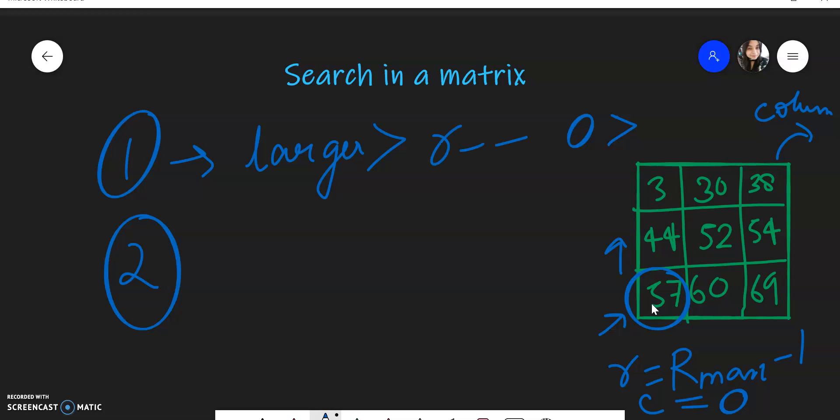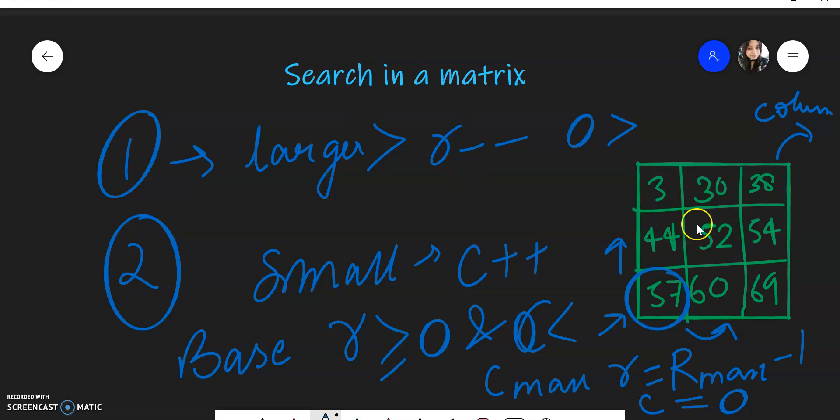Basically, we will do R minus minus, and if it is smaller, we will do column plus plus, right, because we have to go to the next column. And our base condition will be that row should be greater than equal to zero and column must be less than column max. So this is our full algorithm.